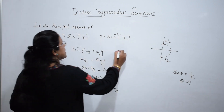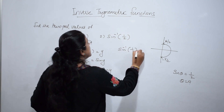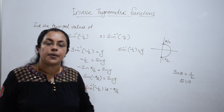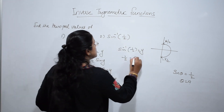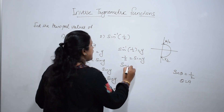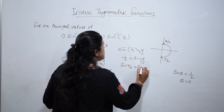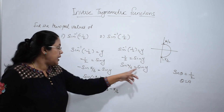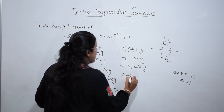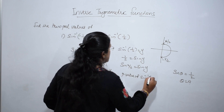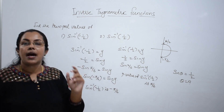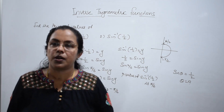Second question: sine inverse of 1 by 2. Let sine inverse half equal y. Then half equals sine y, which means sine pi by 6 equals sine y. Therefore y equals pi by 6, and the principal value of sine inverse (1 by 2) is pi by 6.